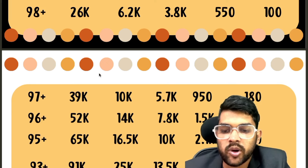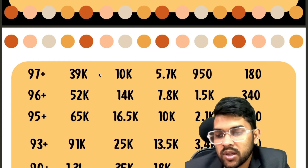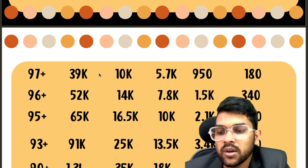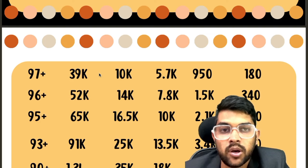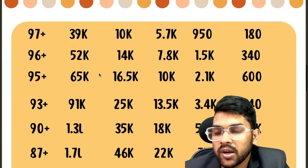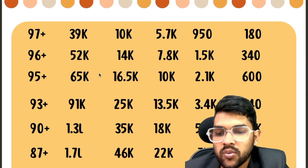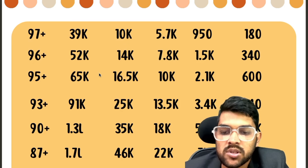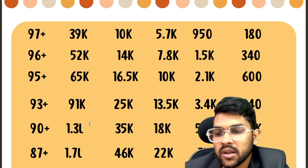For 95 percentile: General 65000, OBC 16500, EWS 10000, SC 2100, ST 600. For 93 percentile: General 91000, OBC 25000, EWS 13500, SC 3400, ST 840.